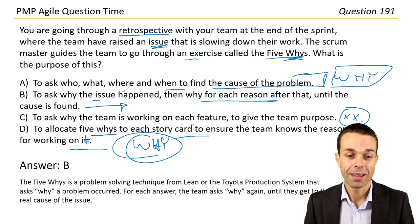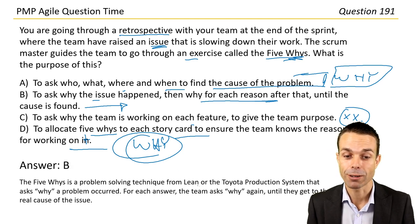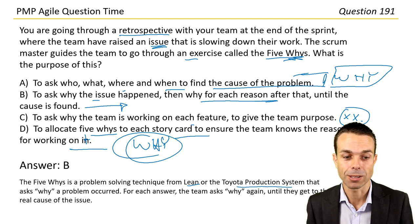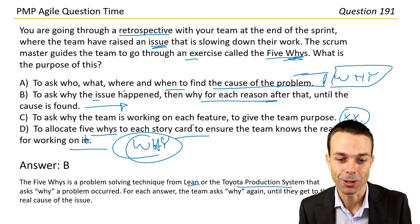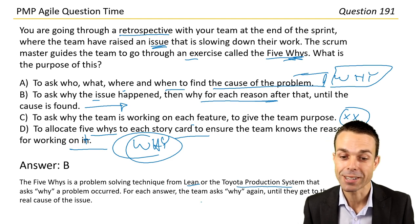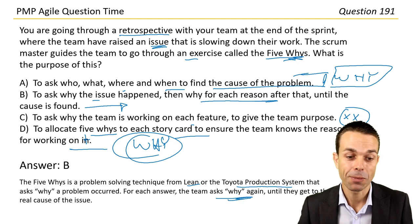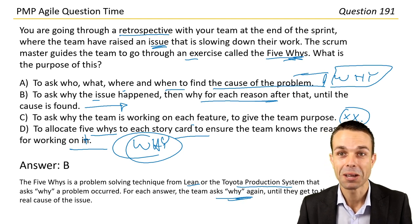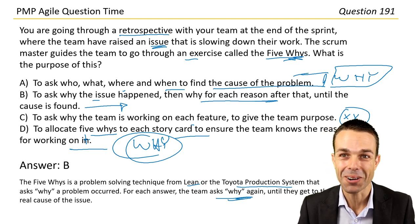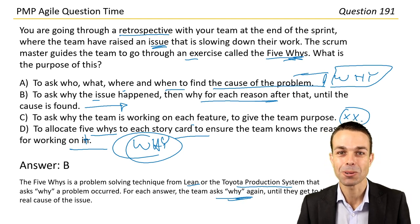Answer B: The Five Whys is a problem-solving technique from Lean or the Toyota production system that asks why a problem occurred. For each answer, the team asks why again until they get to the real cause of the issue. Well done. Let's get into the next question.